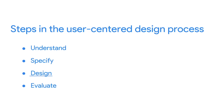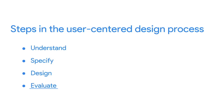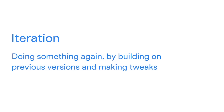Then, design solutions to the end user's problem — this is where you'll come up with ideas for what the product might look like and actually start building it. Finally, evaluate your design against your end user's needs to find out if your design solves the problem, and you'll do it by testing with real people. It's important to keep in mind that iteration is key — iteration means doing something again by building on previous versions and making tweaks.